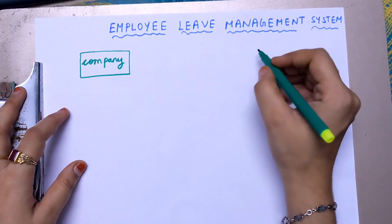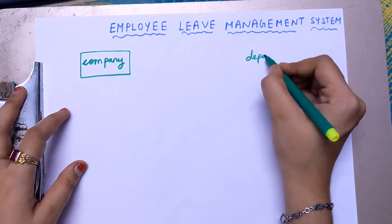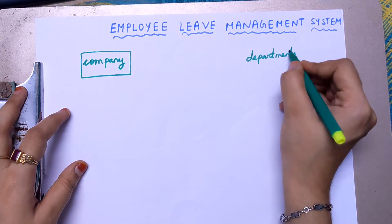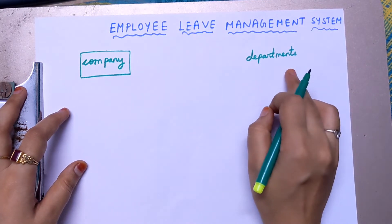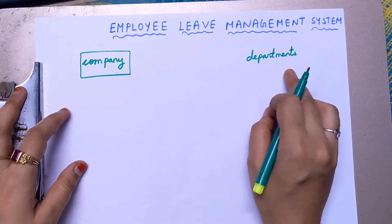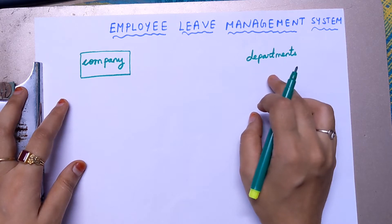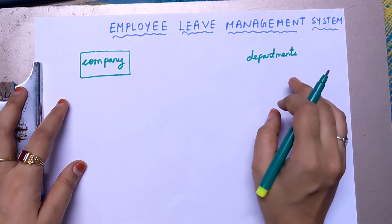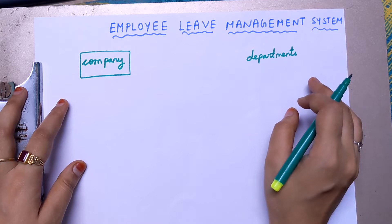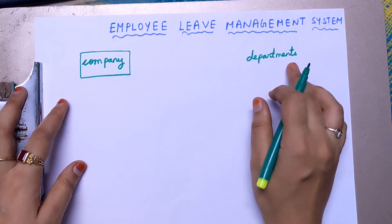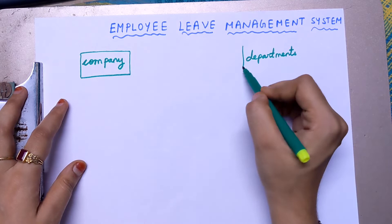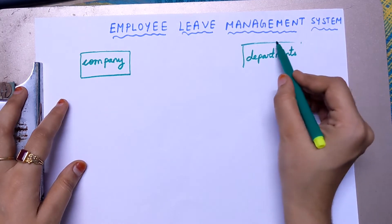The second entity is departments. Department is not physically existing — it is conceptually existing. Inside a company, various departments exist conceptually, with certain teams belonging to one department and others to another. Since it is conceptually happening, it is an entity, written inside a rectangular box.